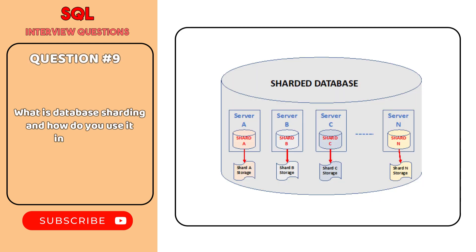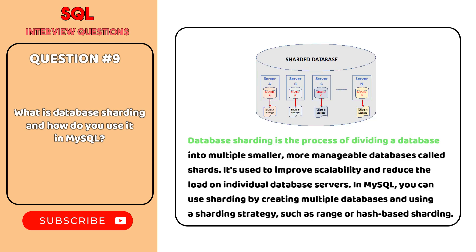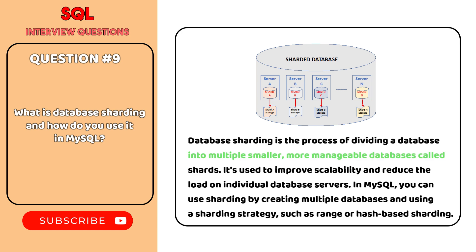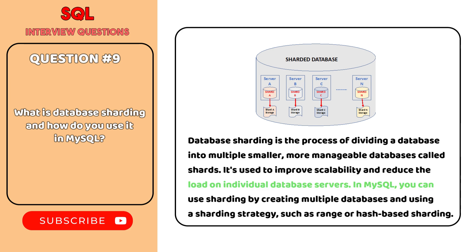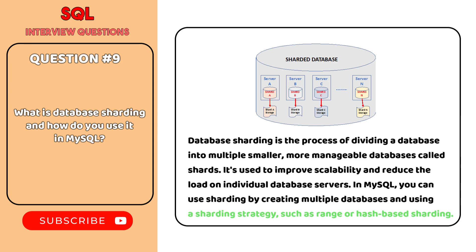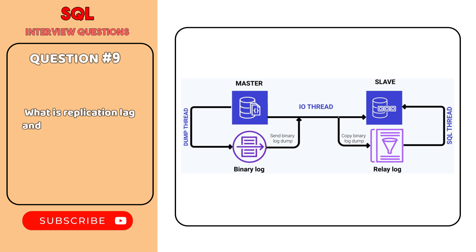What is database sharding and how do you use it in MySQL? Database sharding is the process of dividing a database into multiple, smaller, more manageable databases called shards. It's used to improve scalability and reduce the load on individual database servers. In MySQL, you can use sharding by creating multiple databases and using a sharding strategy, such as range or hash-based sharding.